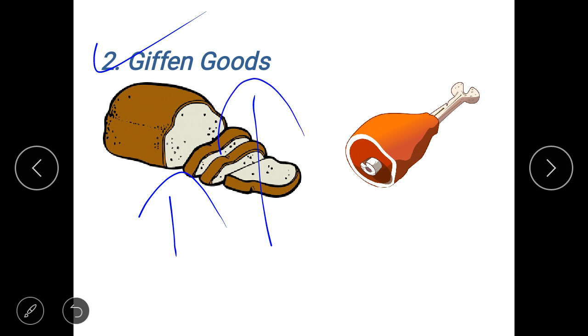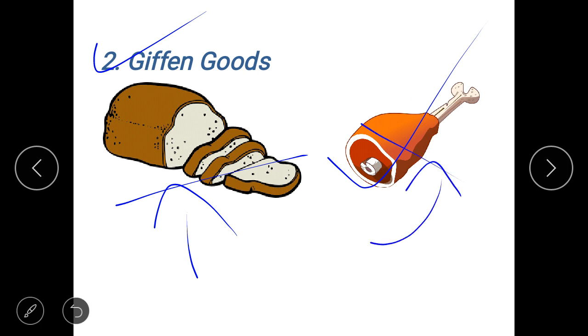Now why did this happen? The Britons, they were accustomed to eating bread. Bread was the staple diet and along with bread they also ate other expensive food items such as your meat. Now when the price of the bread increased, the purchasing power of the Britons declined so much that they had to cut down the consumption of your expensive food items like your meat.